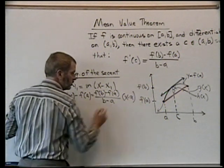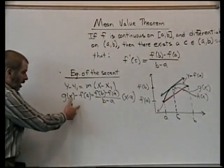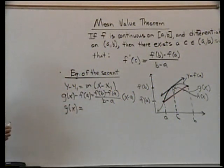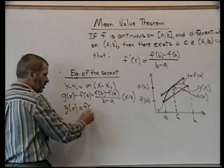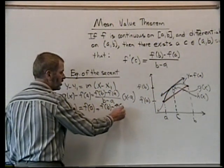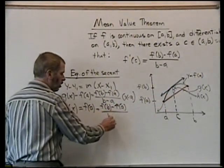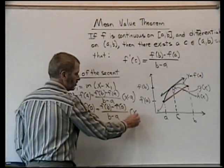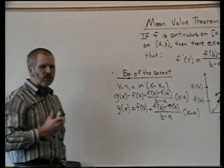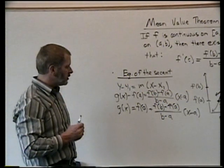and that would be times (x - a). In a better form, because we're ultimately going to want to do some substitution, g(x) is equal to f(a) + [f(b) - f(a)] / (b - a) times (x - a). That's the general equation for that secant line.